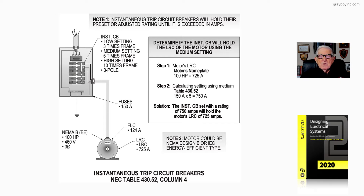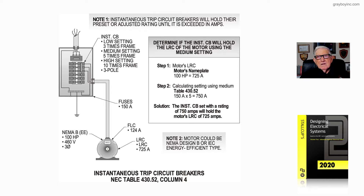Basically what we would do is check out the starting current of the motor. If you had a design letter you could use that to do so. For example, if you're using a design B motor and go to table 430.251(B), you can get the starting current of that motor if it's not a high-efficiency motor. But notice in the callout in the illustration — it's a high-efficiency motor, 100 horsepower, 460 volt, three-phase, so the starting current could be high.